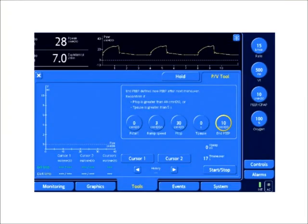This slide is just another example. This is a screenshot of the Hamilton G5. And they call their maneuver for PV analysis of the pressure volume curve the PV tool. And as you notice, I selected my tools under here, and that brings me to a hold or the PV tool itself.